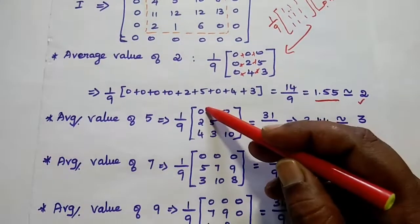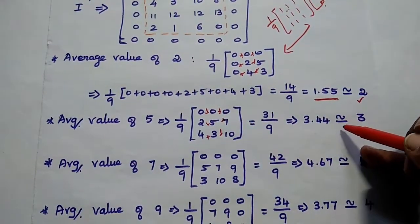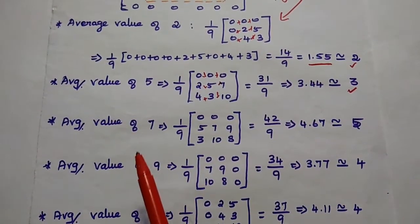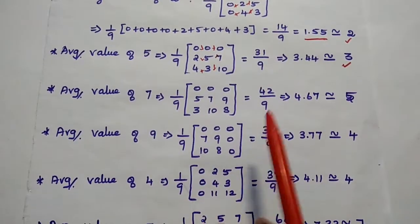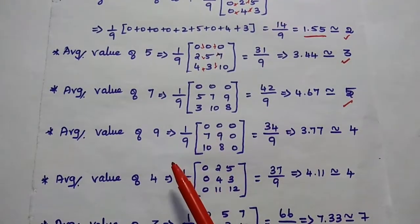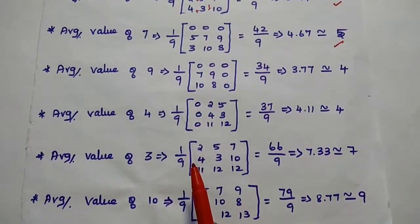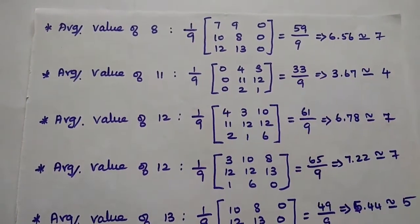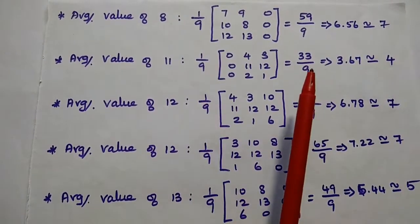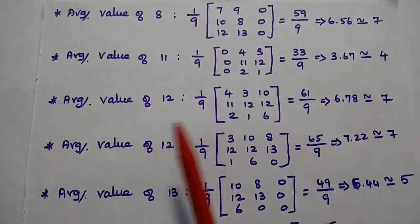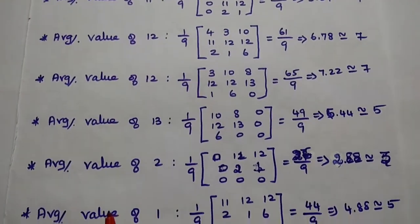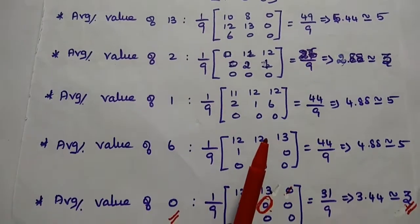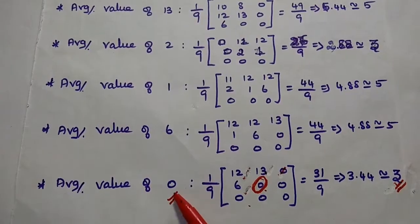The average value of 5 is 3. The average value of the next pixel 7 is 4.67, approximately equal to 5. Similarly, we find the average values for all pixel values of the given image data. Average value of 8 is 7, average value of 11 is 4, average value of 12 is 7, average value of the other 12 is 7, average value of 13 is 5, average value of 2 is 3. For pixel value 1 its value is 5, for 6 its value is 5, and for the last pixel 0 the value is 3.